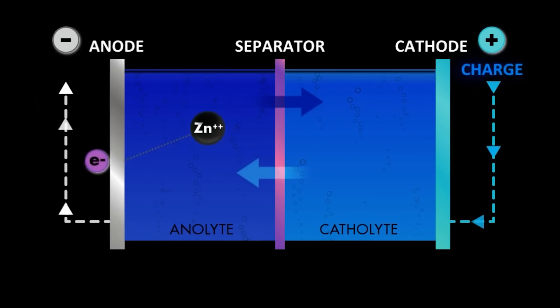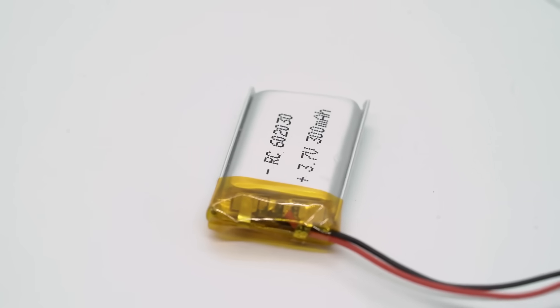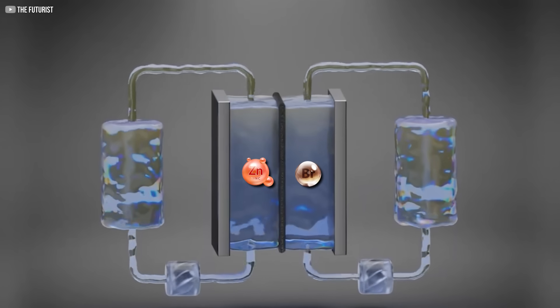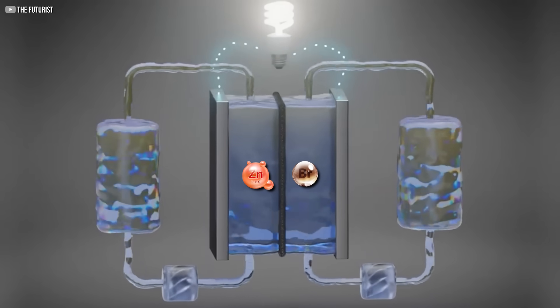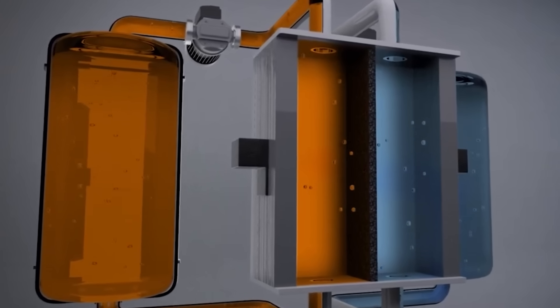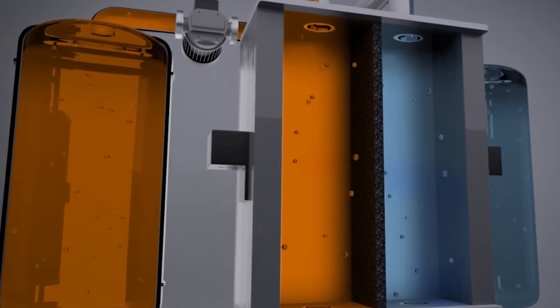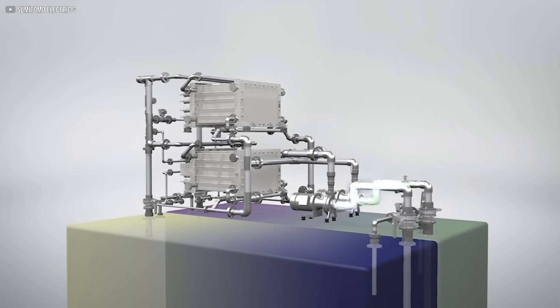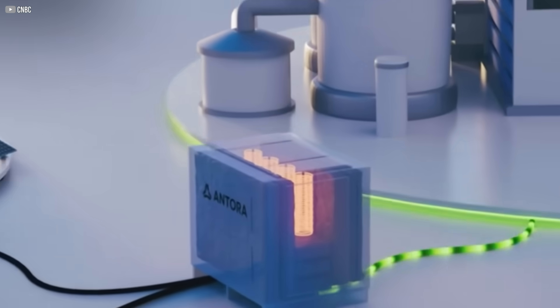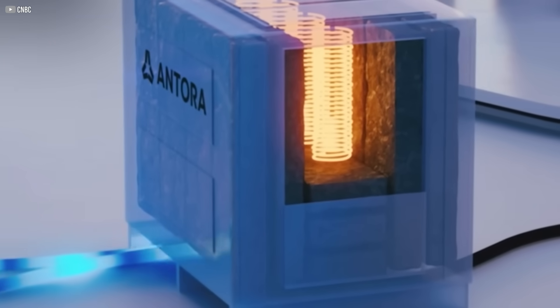At their core, zinc bromine batteries are a type of redox flow battery, which means they don't rely on tightly packed solids like lithium does. Instead, they use tanks of liquid electrolytes, one with zinc ions, the other with bromine. These liquids are pumped through a cell stack, separated by a membrane. As they flow, they exchange electrons through a redox reaction, creating electricity. When you want to charge it, the process just runs in reverse. It's a clever system.